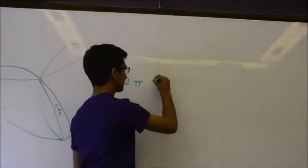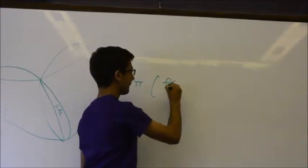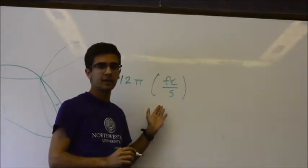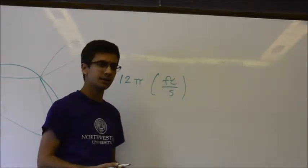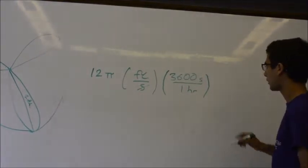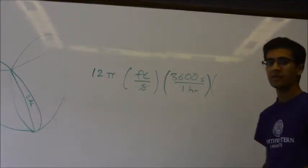So to find out the distance for each rotation we need the circumference of the circle. The formula for the circumference of a circle is 2πr. And so we know r is two feet. So the circumference of this circle is 4π.